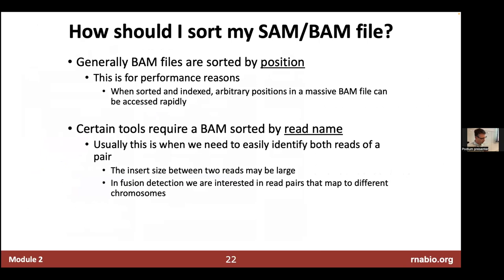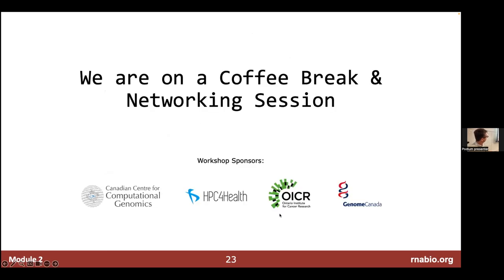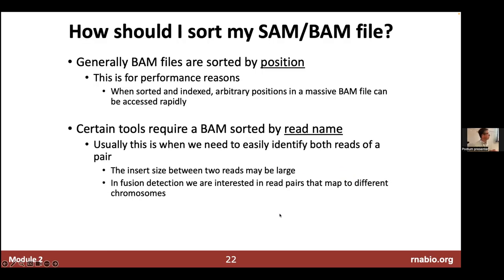How should you sort your BAM file? Before you index a BAM file or use it, you often need to sort it. The most common thing to do is sort by position, and in this course we'll mostly, if not always, sort by position. But occasionally you may find that you need to sort your BAM file by read name. This is usually done when you need to easily identify both reads of a pair — one common example is fusion detection, where you're really focusing on where the two reads are in relation to each other, so sorting by read name can be more efficient for that kind of application.